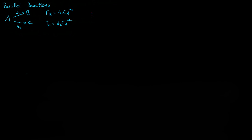If we were to write the reaction rate of A — before, if it was just one single reaction, it would just be equal to the reaction rate of B. But now we also have C being produced, so we must add in that. The production of B and C gives us the reaction rate of A. Plugging in Rb and Rc, we get: -Ra = K1[A]^α1 + K2[A]^α2.